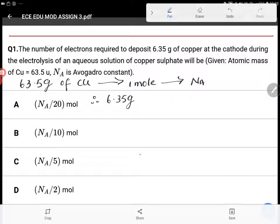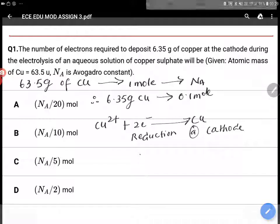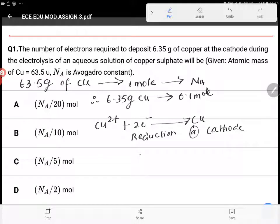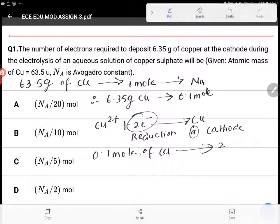Now Cu2+ plus 2 electrons gives Cu. So this is the reduction reaction taking place at the cathode during electrolysis. 0.1 mole of copper will require 2 into 0.1 mole of electrons.